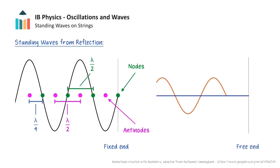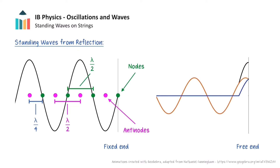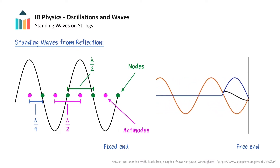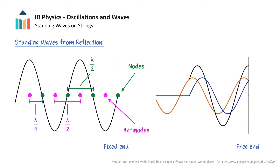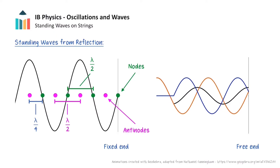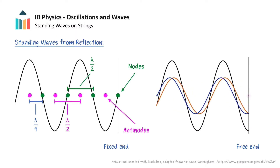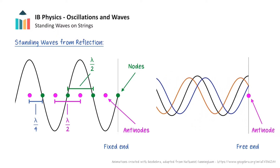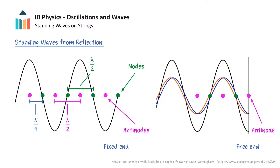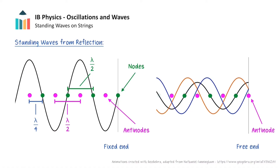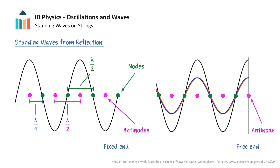Now in the following animation, we have the same orange wave moving towards the right, but it is now incident at the free end of a boundary. This produces a blue reflected wave moving to the left with no phase change. Again, the superposition of the incident and reflected waves forms a standing wave, but this time there is an antinode at the boundary instead of a node. These are the guiding principles to how standing waves are formed on strings and in pipes.